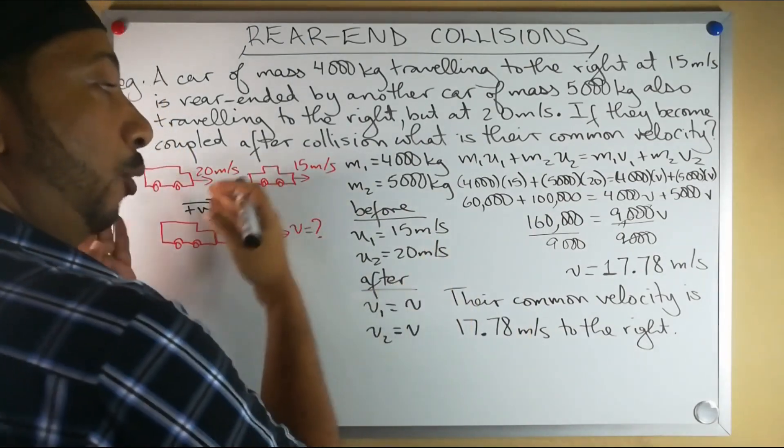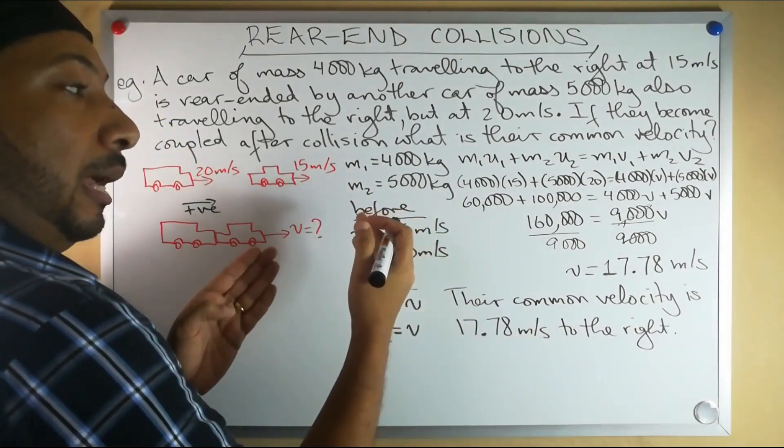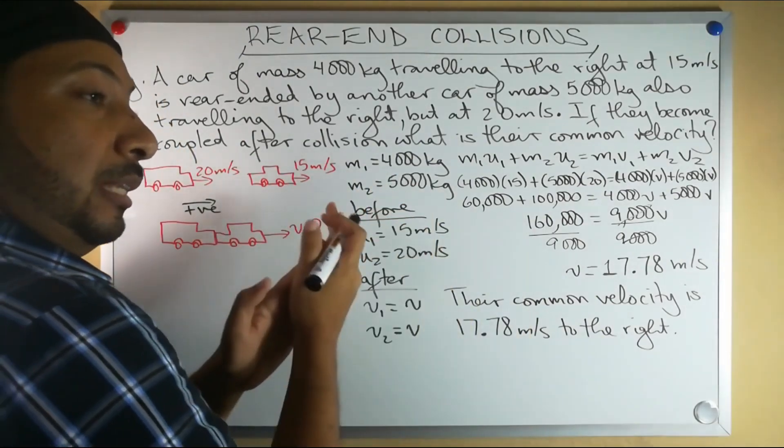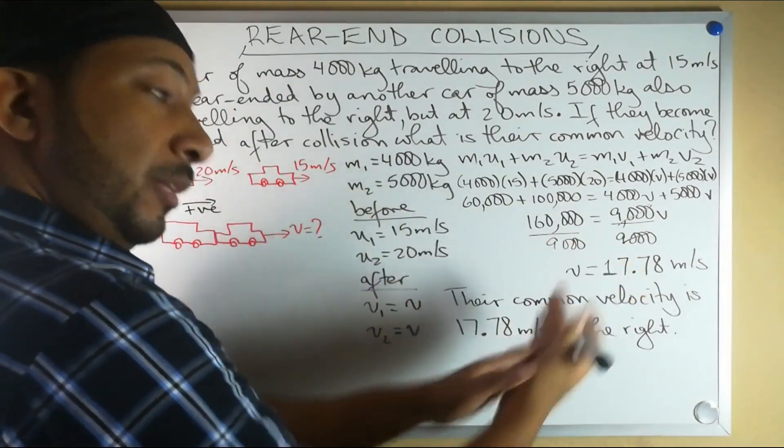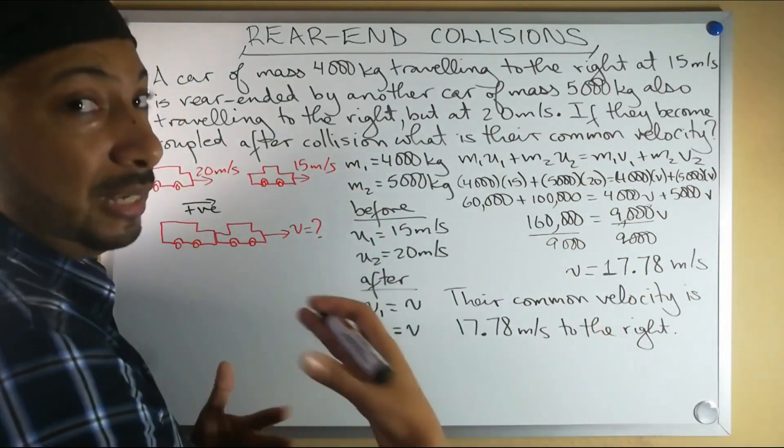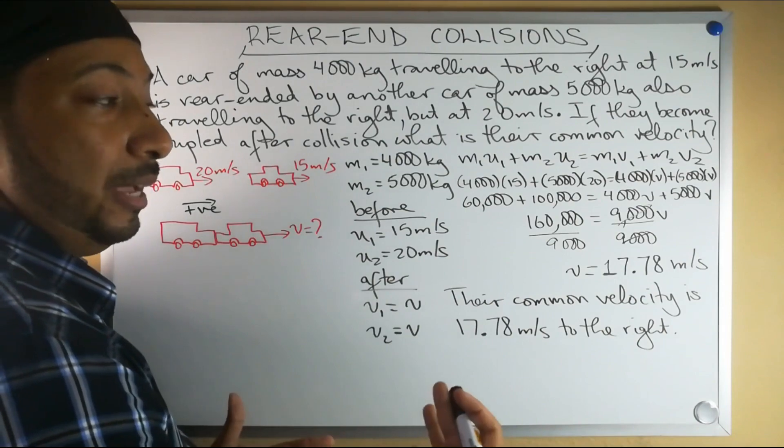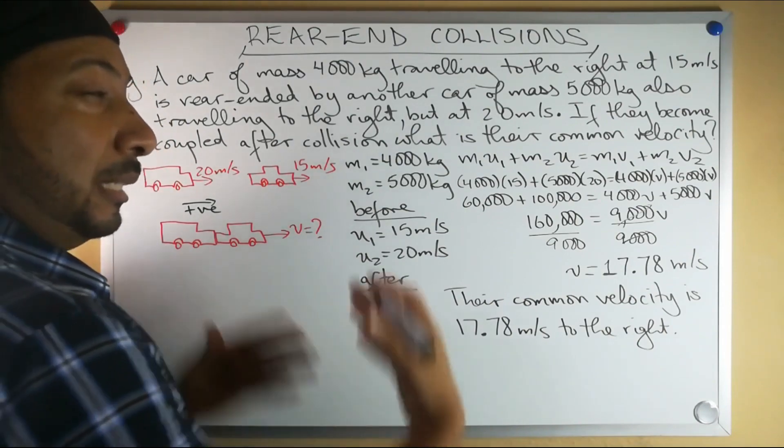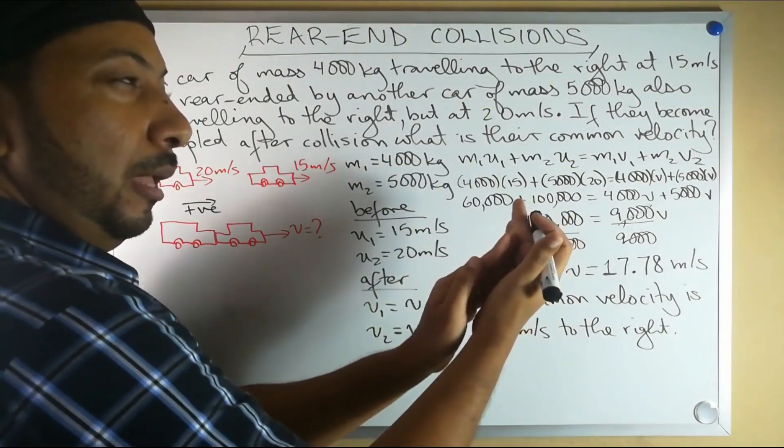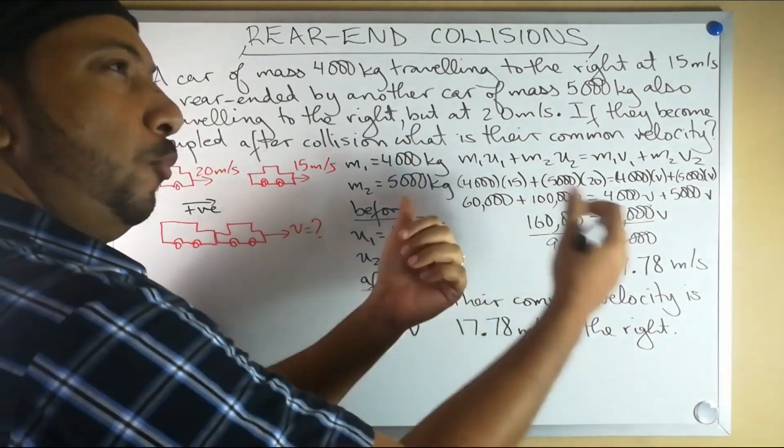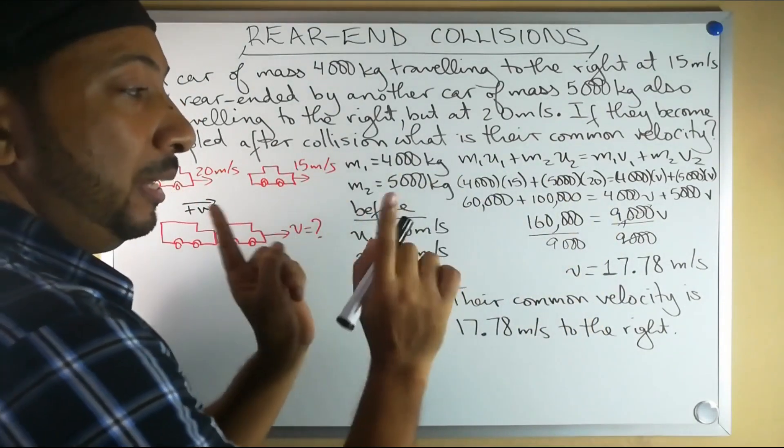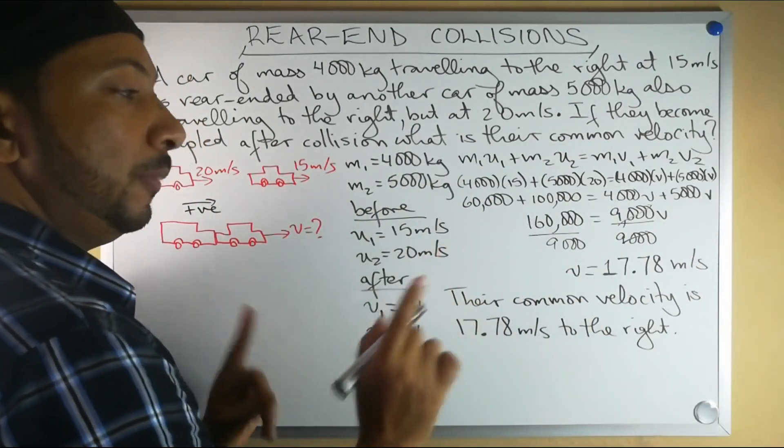Notice that this is positive - positive is to the right direction. It only makes sense that if both of them were traveling to the right and then the smaller car gets rear-ended, they'll continue moving to the right. If you got a negative, that should be like a red flag that something is wrong. It doesn't make sense that both of them are traveling to the right and then after they collide they move to the left.